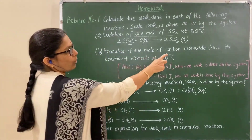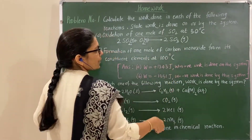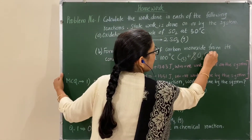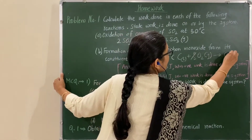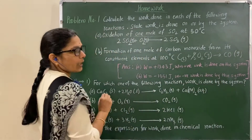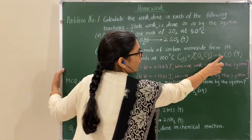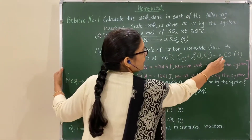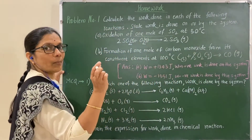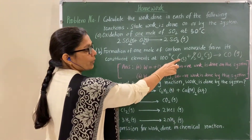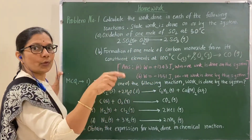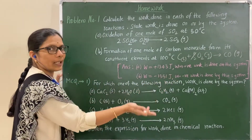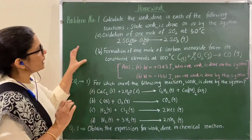The second problem is the formation of one mole of carbon monoxide. The reaction is: C (solid) plus half O2 (gas) gives CO (gas). This reaction is balanced and is for one mole CO. Delta n equals 1 minus 0.5, which is 0.5. Since delta n is positive, work is done by the system.